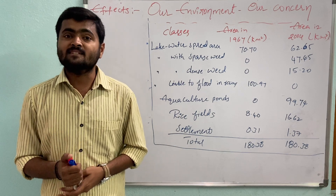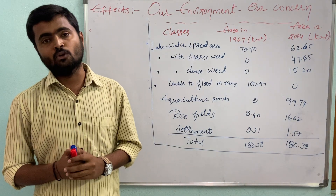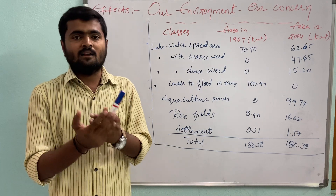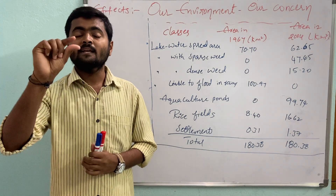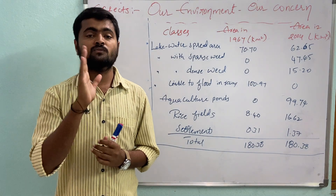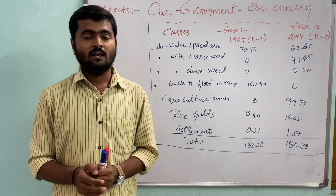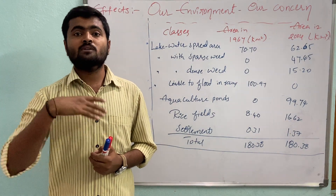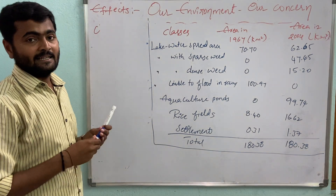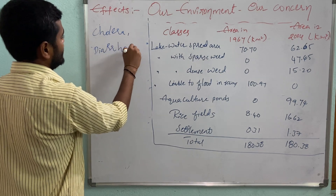The contamination showed biological, chemical, and physical influences on Kolleru. Migratory birds stopped coming because aquaculture promoted monoculture — cultivating only the fish varieties useful to investors — instead of polyculture. People faced many floods because of the shrinking of Kolleru Lake and decreased water-holding capacity. Water contamination caused diseases like cholera and diarrhea among the local population.